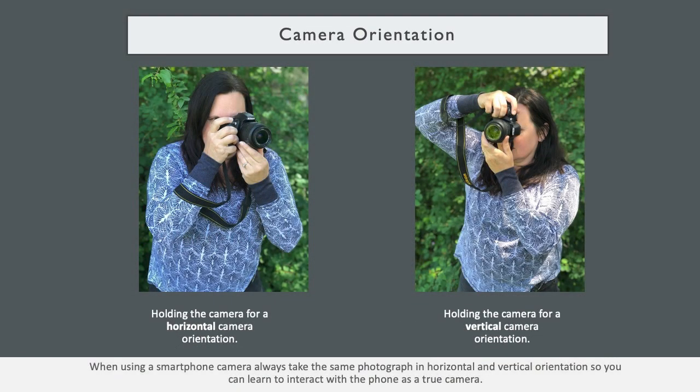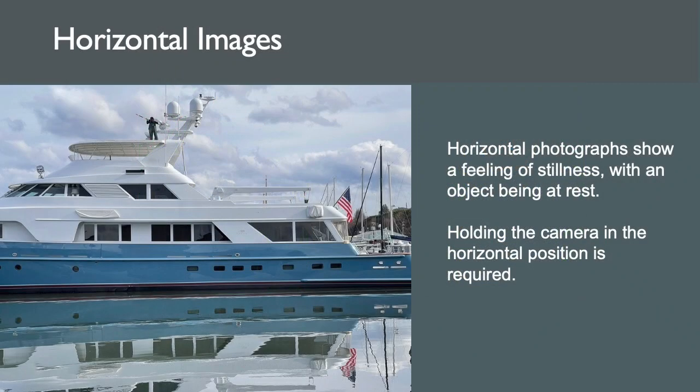Camera orientation is an important part of this week's lesson. For the horizontal image, be sure to hold your camera horizontally. For the vertical, be sure to hold your camera vertically. When using a smartphone camera, get in the habit of taking the same photograph in both horizontal and vertical orientation each time, so you can learn to interact with the phone as a true camera.